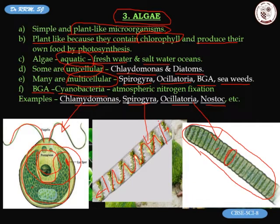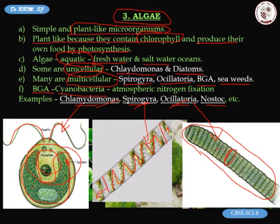It is important to remember examples of algae because they are often asked in exams. The three key ones — chlamydomonas, spirogyra, and oscillatoria — are easy to remember, and their simple diagrams are easy to draw. Now let us proceed to the fourth type of microorganisms: fungi.